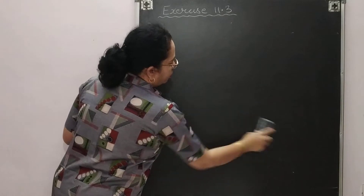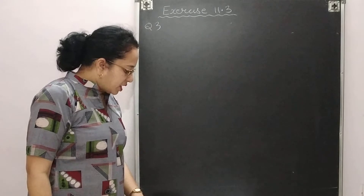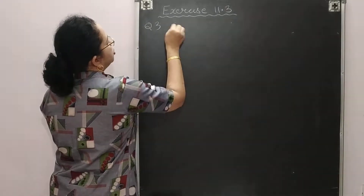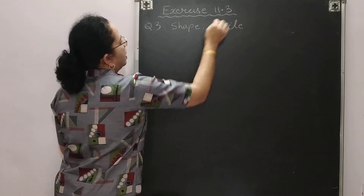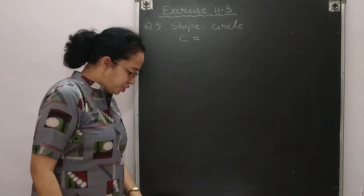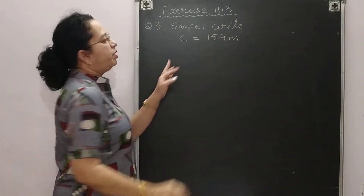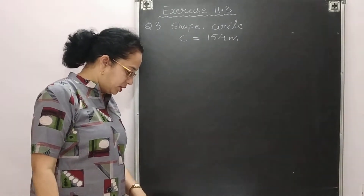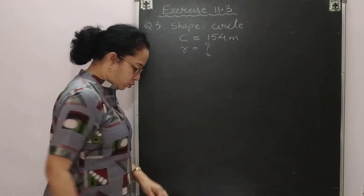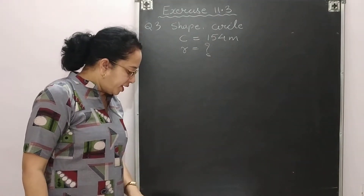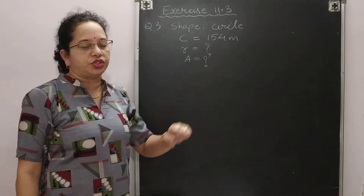Now we solve question number 3. The circumference of a circular sheet is given as 154 meter, so C = 154 meter. We need to find the radius (question mark) and also find the area of the sheet (also question mark).